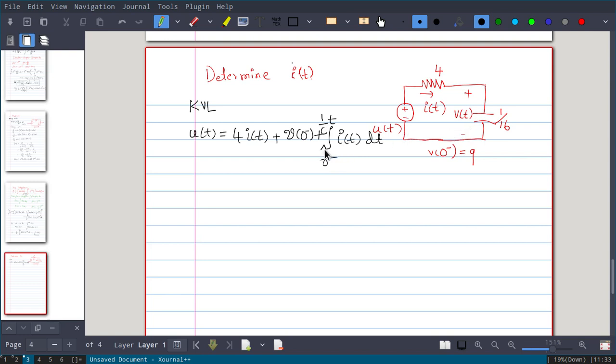This is the voltage across the capacitor. Initial voltage is given as 9 volts. Voltage across capacitor is simply 1/c times the integral from 0- to t of i(t) dt. So we can write: 4 times i(t) plus v(0-) which is 9, plus 16 times the integral from 0- to t of i(t) dt.